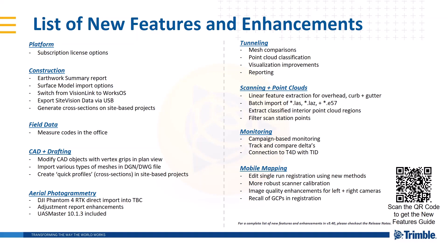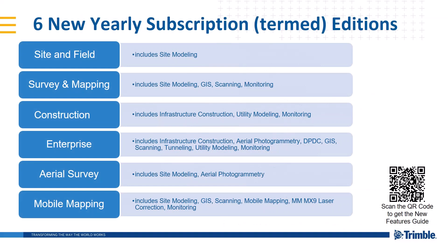We're going to highlight a few of those for you today, starting with the new yearly subscriptions. We've taken our traditional editions and packaged them into six new offerings that you can purchase on a yearly subscription-based license. If you want data prep tools, you would start with the Site and Field edition. If you want data prep plus takeoff and even utility modeling, you would jump to the Construction edition. If you want the full suite of offerings, you can go right to the Enterprise edition. These editions allow you to get into Trimble Business Center at a lower entry price point.